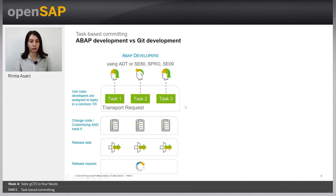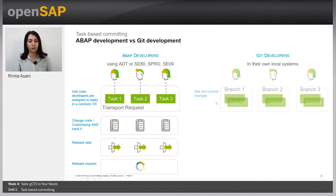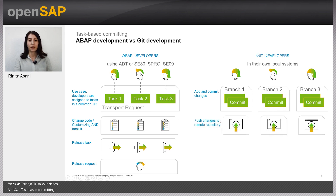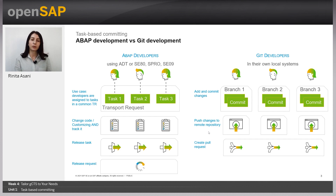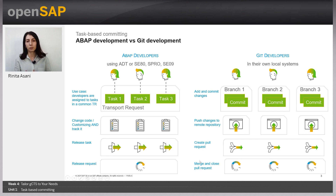Now let's move to the Git World. In Git World, developers work in their own local systems. In this use case, each of the three developers works on their own local branch. They add and commit their changes, then push the changes to the remote repository. To merge their branches to the main branch, they need to create a pull request – asking someone to review and approve their changes. If everything is okay, their branches are merged to the main branch and the pull request is closed.